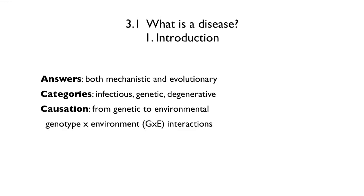We'll end up seeing that genotype-by-environment interactions — which means basically that the way the patient responds to the disease depends upon their genotype — are really central. And because they are almost a universal feature, it means that we have to concentrate on the interaction, because that's where most of the action is. Let's begin with mechanistic and evolutionary explanations.